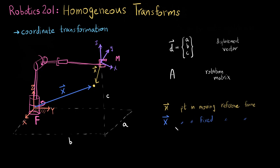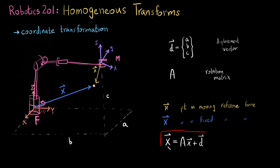That is just a convention — small letters for the moving frame, capital letters for the fixed frame. So how do we express the same point from the moving frame to the fixed frame? The way is very simple: this is what coordinate transformations is. You use this equation: big X equals the rotation matrix times small x plus d.